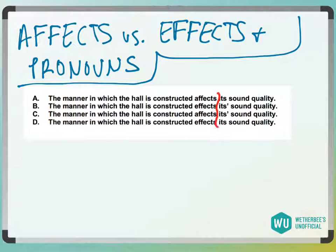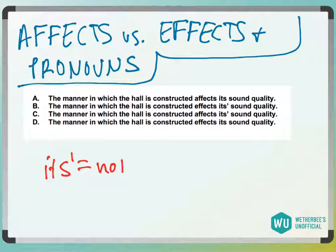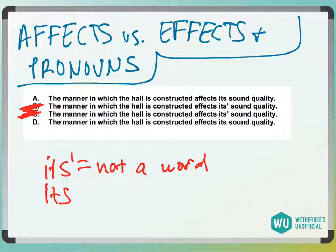And then we have, is it its or it's apostrophe? Remember that it's apostrophe is not a word ever. It's always going to be incorrect. So that makes B and C incorrect immediately, because the possessive form of its is I-T-S without an apostrophe. That makes only A and D appropriate.